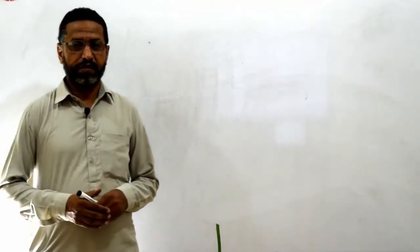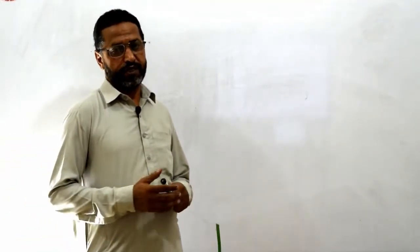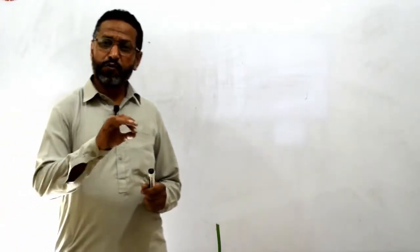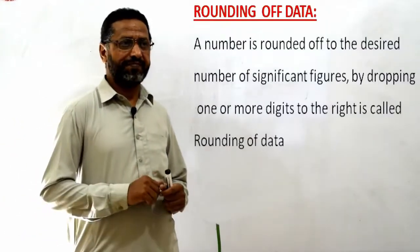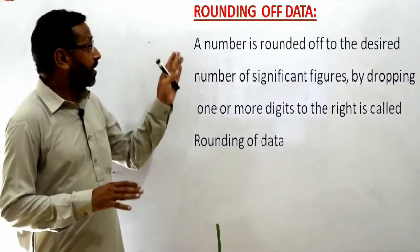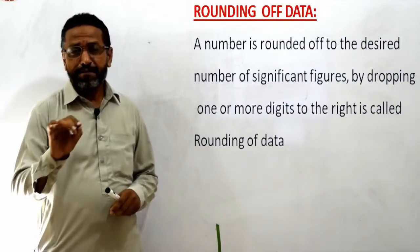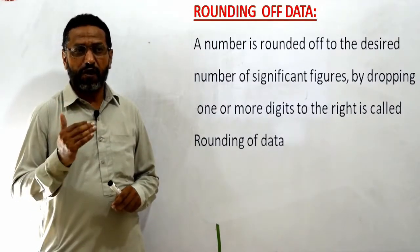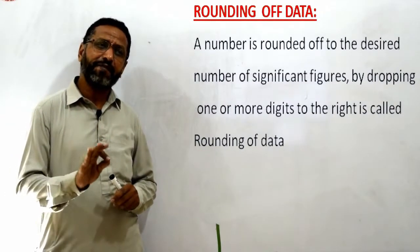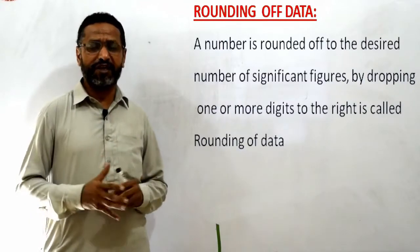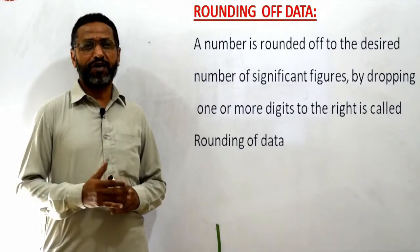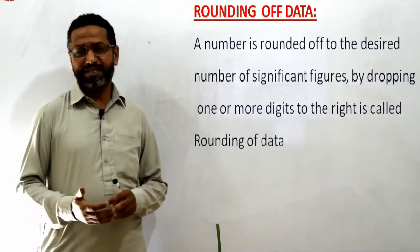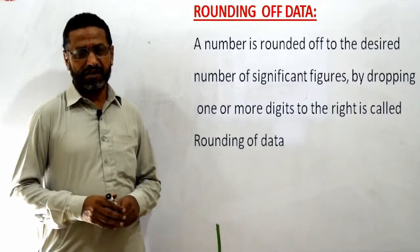Bismillahirrahmanirrahim. Dear students, our next topic is rounding off data. A number is rounded off to the desired number of significant figures by dropping one or more digits to the right — this is called rounding off data.